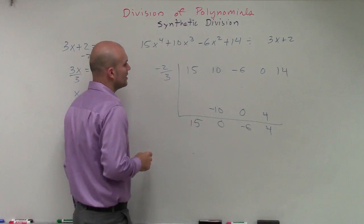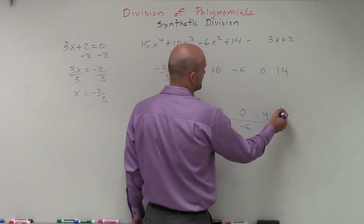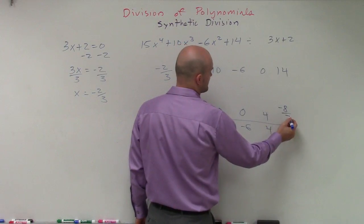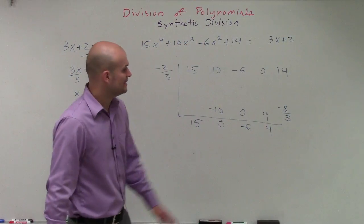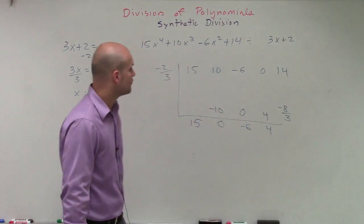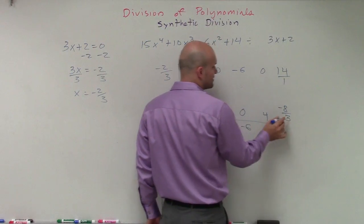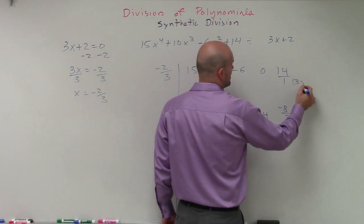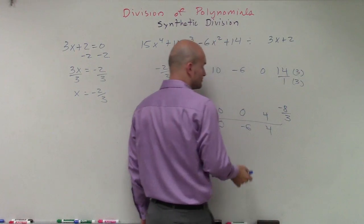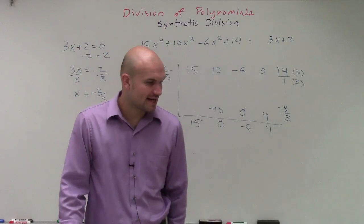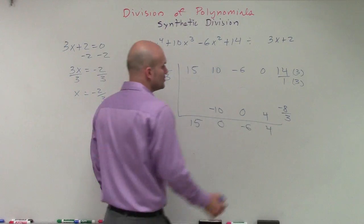4 times a negative 2 thirds will be a negative 8 thirds. So now what we need to do is we need to convert our 14 over to a fraction with a denominator of 3, so I'll multiply by 3 over 3. So I have 14, 28, so that's going to be 42 over 3.